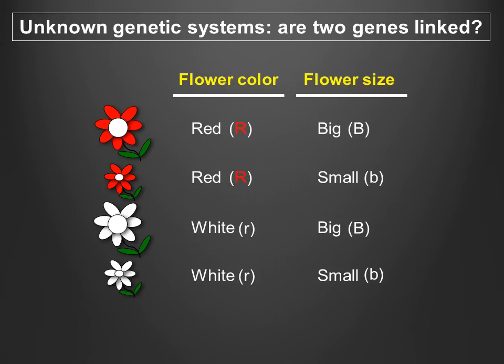To illustrate this concept, we will use an example of two hypothetical genes that control flower color and flower size. The color gene has two alleles: a dominant allele that produces red flowers and a recessive allele that produces white flowers. The size gene also has two alleles: a dominant allele that produces big flowers and a recessive allele that produces small flowers.